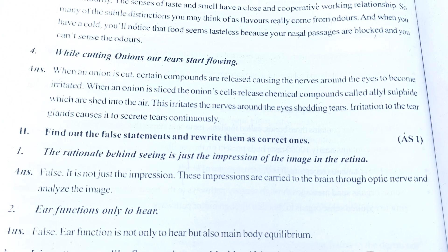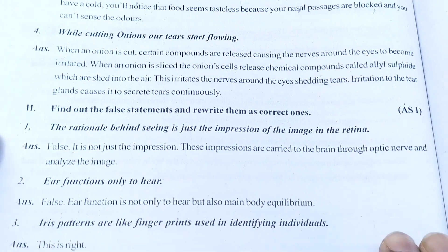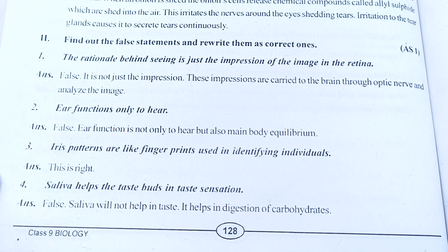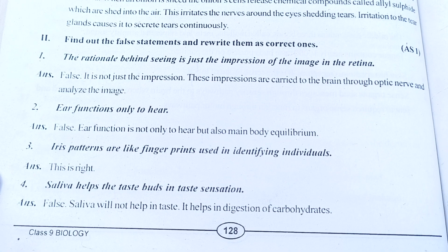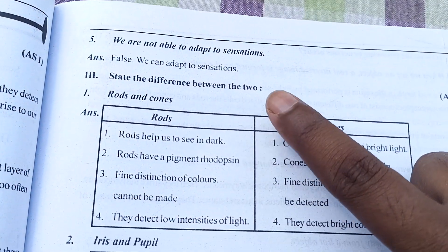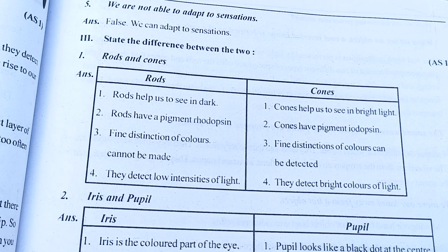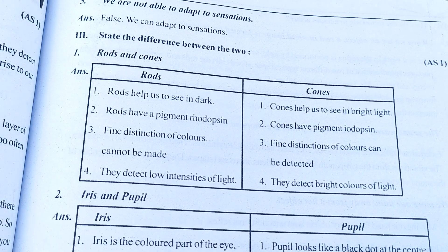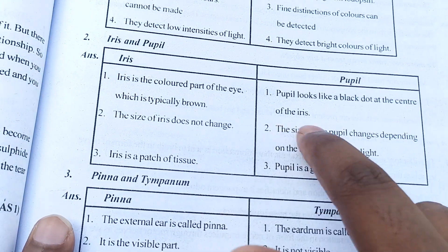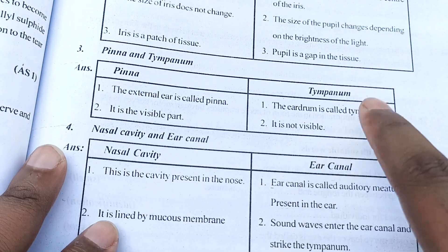Now it is clear — this is the second, third, and fourth one. If you are confused anywhere, just match the question. This is our fifth one, and this is a statement — the difference between rods and cones — this is the answer. And the second one is iris and pupils, and this is the answer of that one. After it is the third one answer.